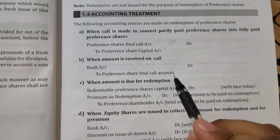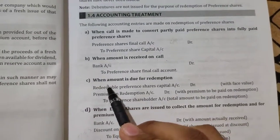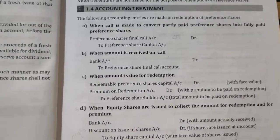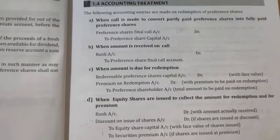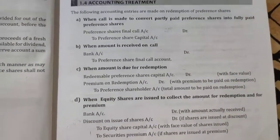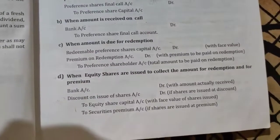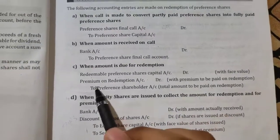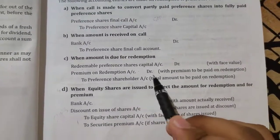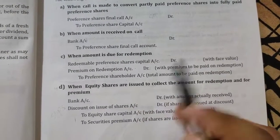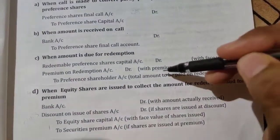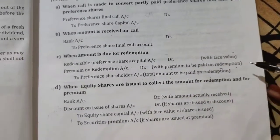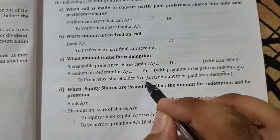When the amount is due from redemption, we have to give the amount to the preference shareholders. We have not yet given it — we have just noted the amount and kept it aside. So the entry is: Redeemable Preference Share Capital Account Dr., Premium on Redemption Account Dr., to Preference Shareholders Account. Here, the face value and the premium to be paid on redemption are both included — these two totals will be added together.